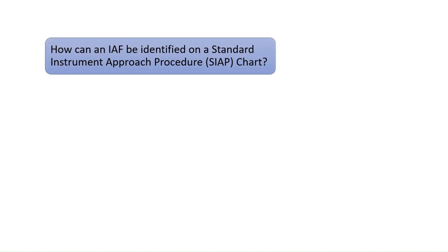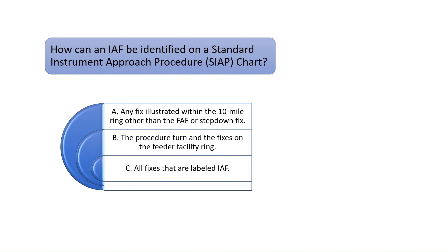How can an initial approach fix, abbreviated IAF, be identified on a standard instrument approach procedure chart? According to Chapter 1 of the Instrument Flying Handbook, all initial approach fixes on a standard instrument approach procedure chart will be labeled as such. The correct answer to question 9 is C.